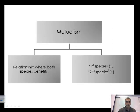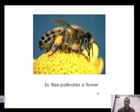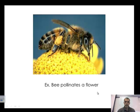Mutualism is a mutualistic relationship that benefits both organisms — a positive for both species. Looking at the bee and the flower: the bee gets the nectar it needs, and the flower gets the pollination it needs to carry on the species. Both organisms benefit from this particular relationship.